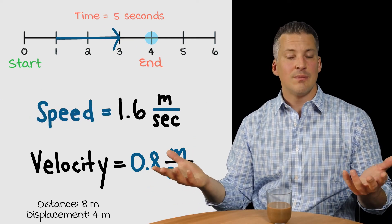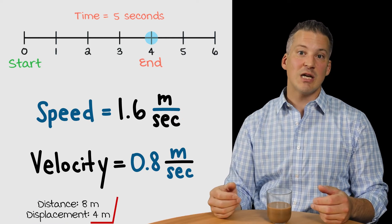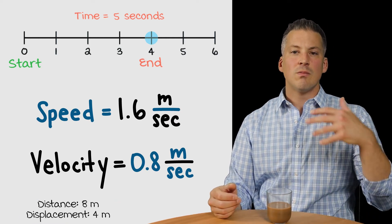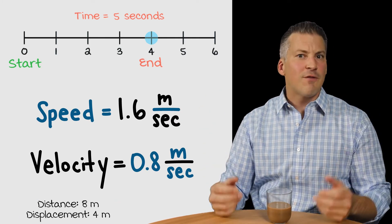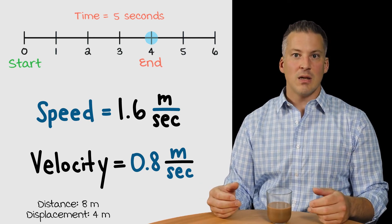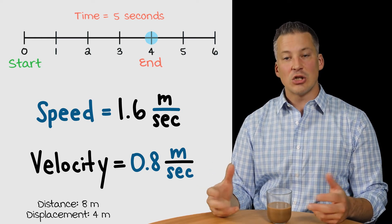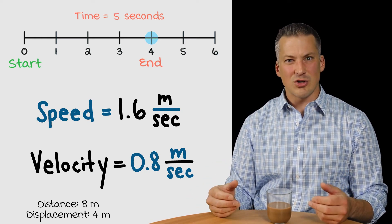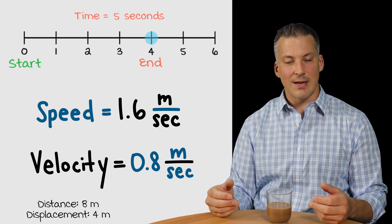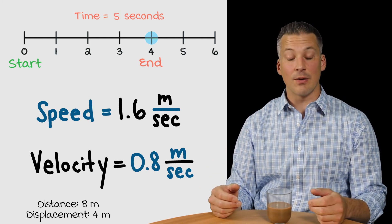Why are the two different? Well, the two are different because the distance was not the same as the displacement. So, in things that we're familiar with, we're used to dealing with speed, the speed of the car. We're not so used to dealing with velocity. Because velocity is dealing with the change in displacement. We really don't talk too much in everyday life about displacement of objects, but in physics, it's really important. So, again, check out that video.